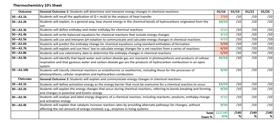Going from the 16th of the month to the 19th, this student has put some work into the heat transfer, formation enthalpies, and calorimetry data — focusing on the quantitative stuff and letting the theoretical review slide. You'll see that they brought their total up to 122 out of 140, which is 87%. So these three days have really been taken advantage of.